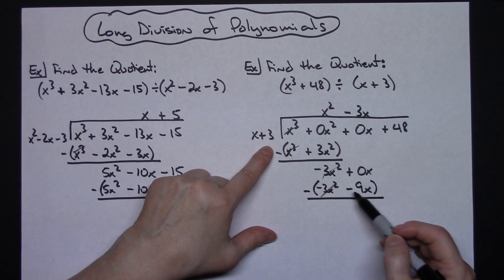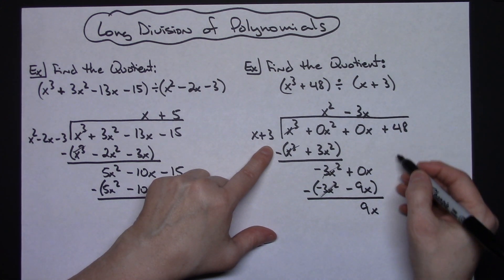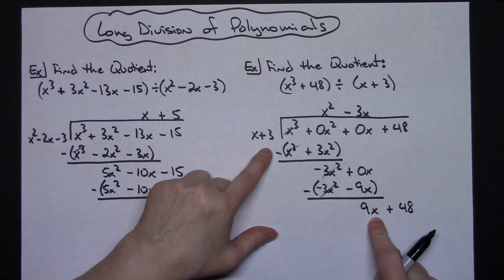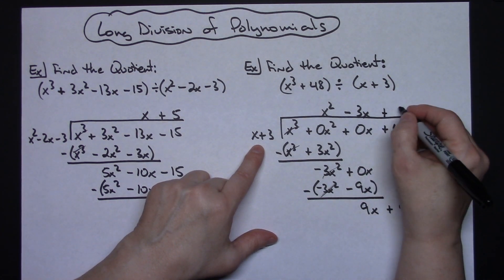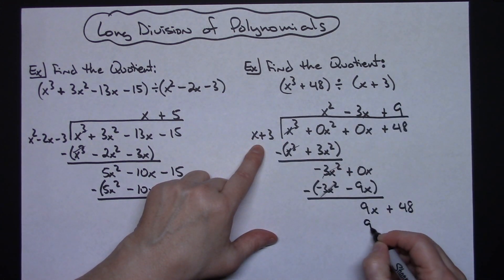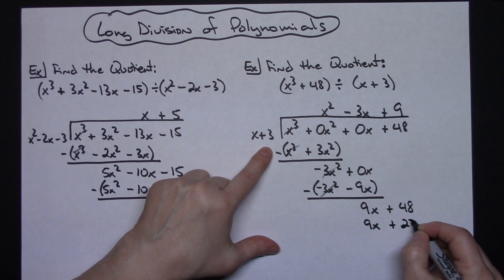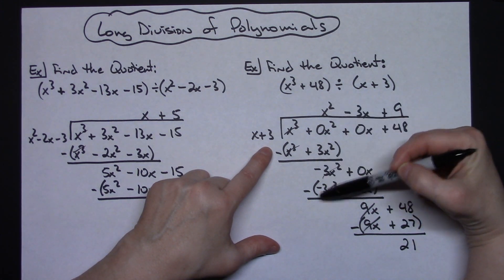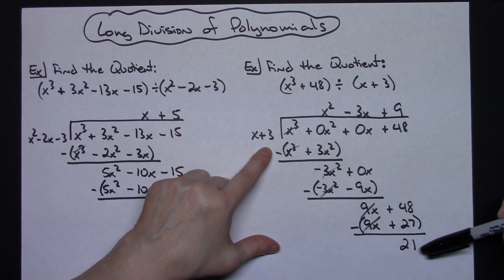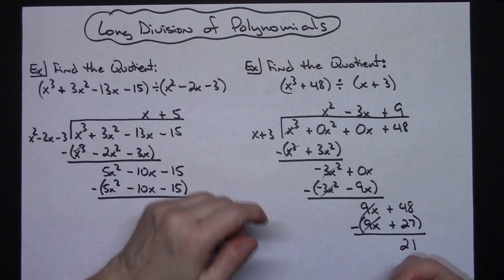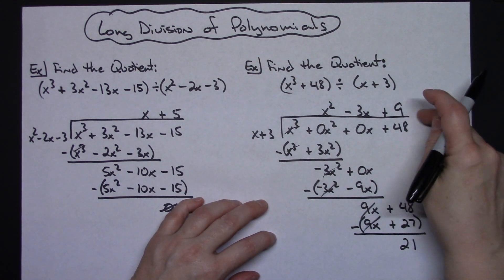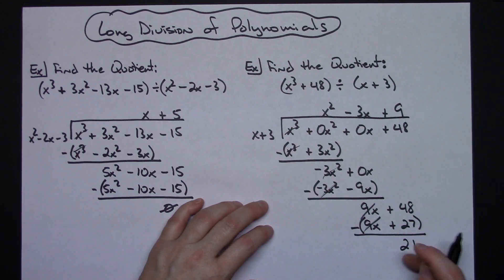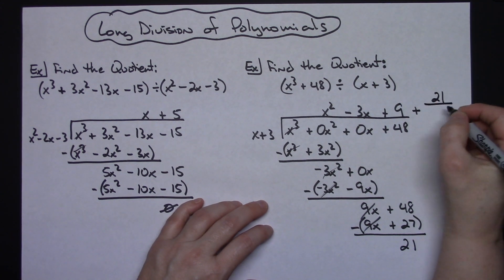Subtracting: the first two terms cross out. 0 minus (−9x) gives 9x. Bring down the last term, +48. x goes into 9x how many times? Nine times — I put 9 above the constants column. 9 times x gives 9x, 9 times 3 gives 27. Subtracting: 9x minus 9x goes away, 48 minus 27 gives 21. Keeping my columns straight shows that 21 is my remainder, written as +21/(x + 3).